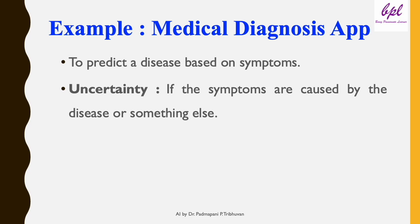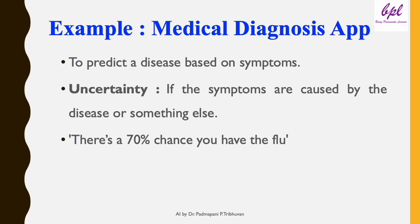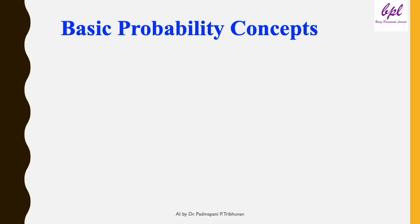To handle this uncertainty, AI relies on probability to make predictions. Probabilistic reasoning helps AI quantify and manage uncertainty, enabling it to make the best possible decisions even with incomplete or noisy data. Imagine being able to say there is a 70% chance you have the flu — that's probabilistic reasoning in action.